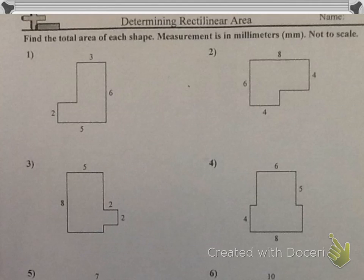Today in class we learned how to find the area of a rectilinear figure. For number one, we can divide the rectilinear figure into two smaller rectangles to find the area. I can divide it vertically here, forming two smaller rectangles, or I can divide it horizontally.